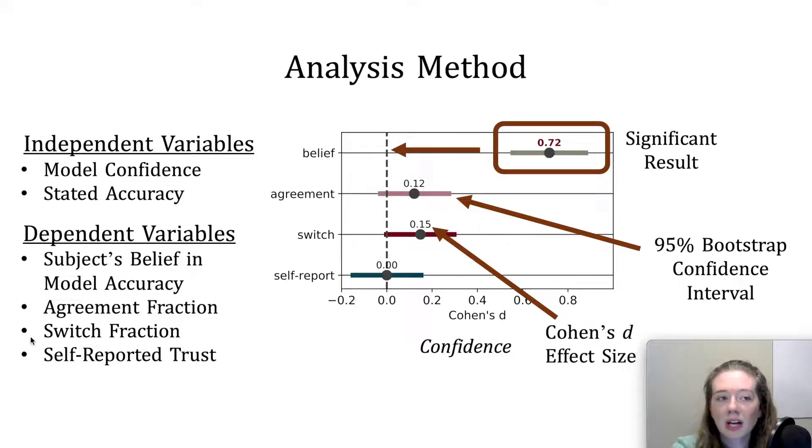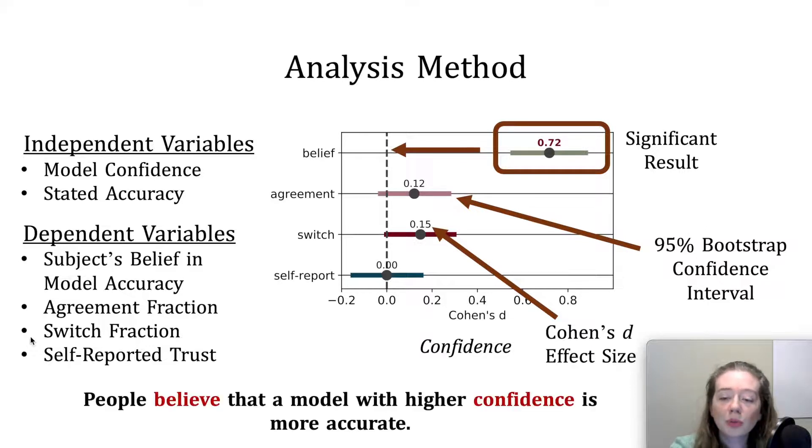We interpret the significance of confidence interval based on where it falls in relation to zero. For example, if the full range of the interval is greater than zero, then that implies that trust was significantly greater for subjects in treatments with a high performance indicator, such as high confidence.